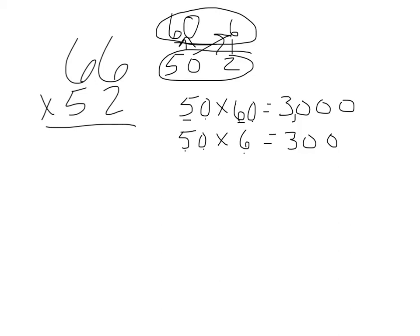Then 2 has to wrestle the other team, so 2 times 6 is 12. And 2 times 60, I have 12. I have one zero in my factors, so I'm going to put one zero in my product.